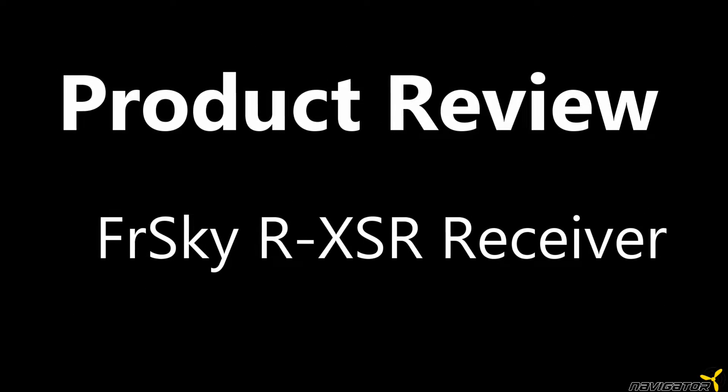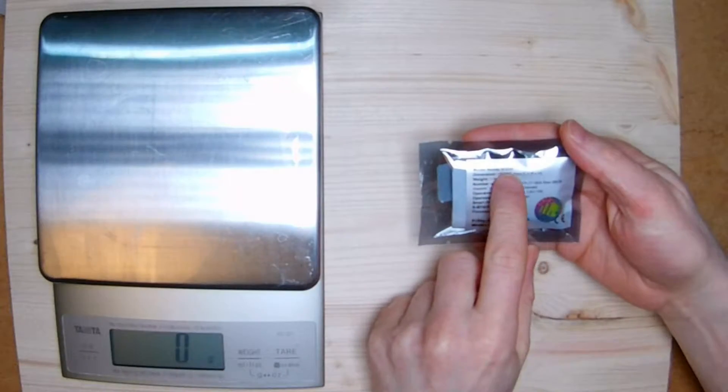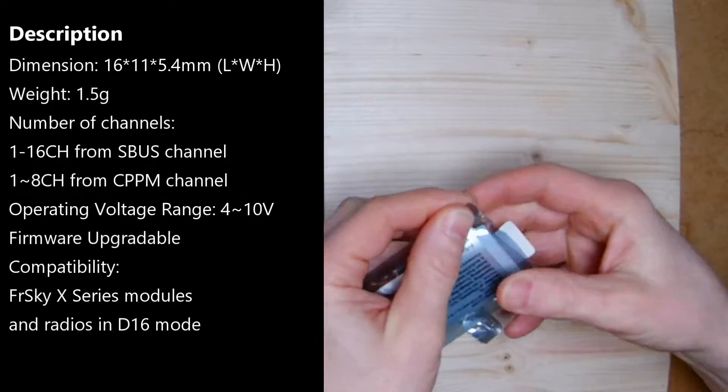Hello and welcome on this super short review of the FRSKY RXSR receiver. The FRSKY RXSR is amazingly tiny and is 1.5g very light.